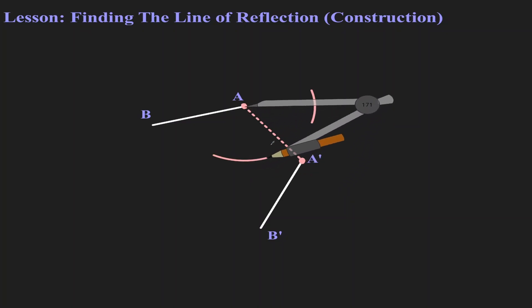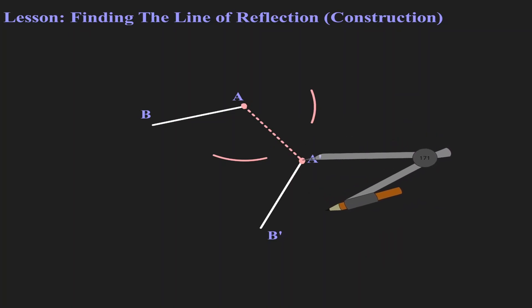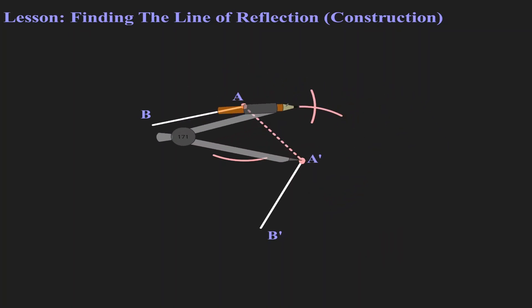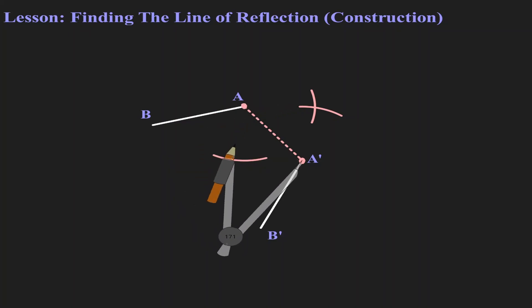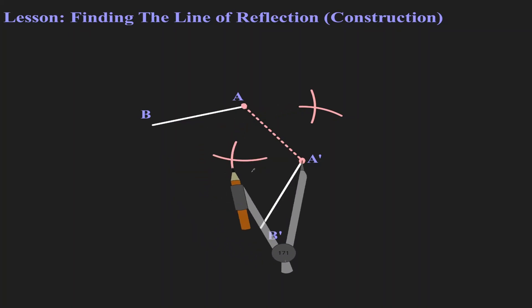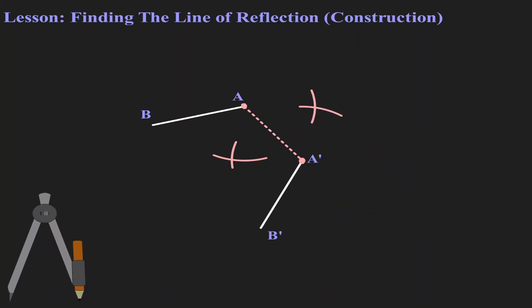Without changing the length of my compass, now let's move the metal leg to A'. Let's look for the intersection on the top, and let's look for the intersection on the bottom. Let's not connect those marks yet.